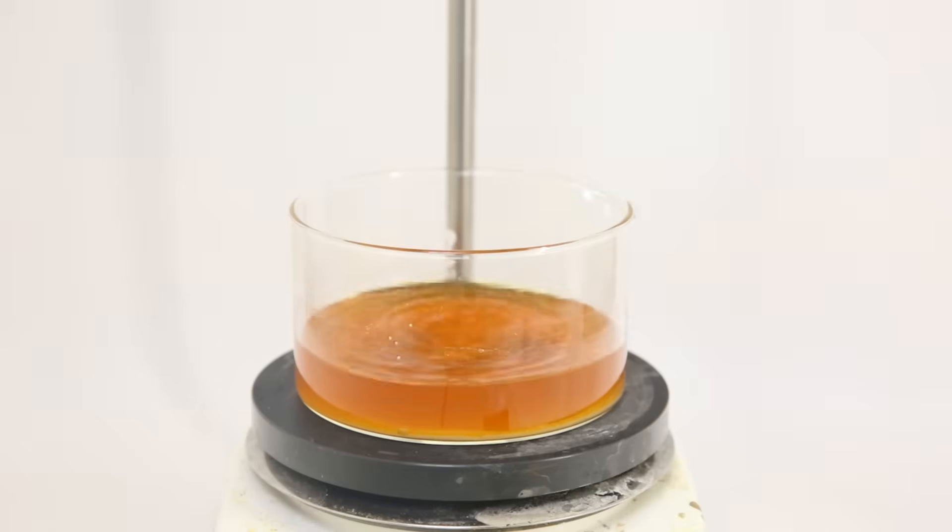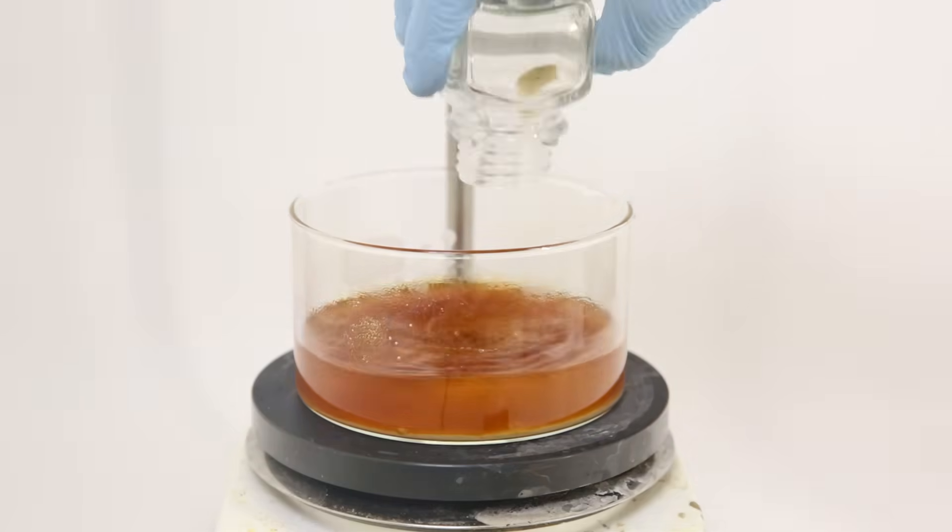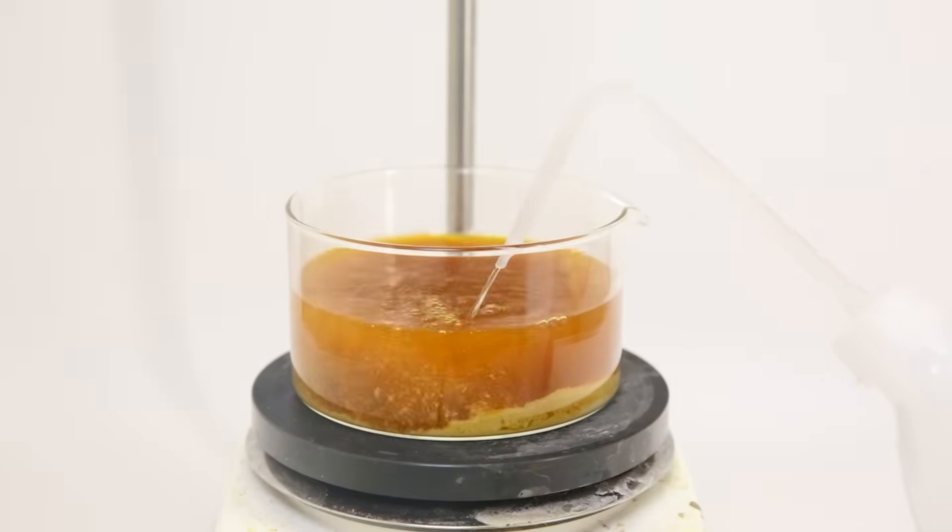So I add in a bunch more acetone, bring it to a boil and then put in all of the powder. I mix it for a bit to get out most of the vanillin and then I filter everything through a paper filter.